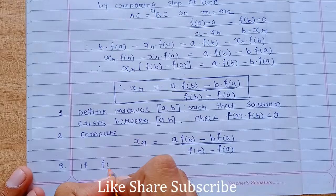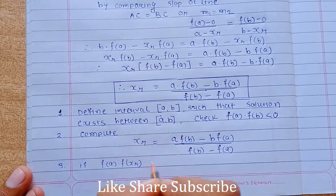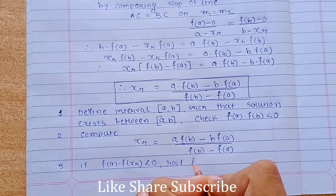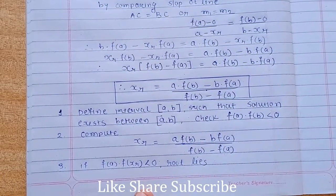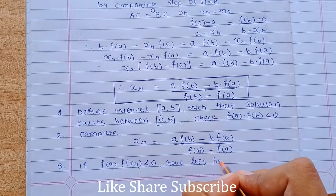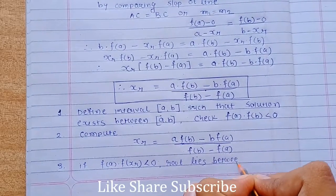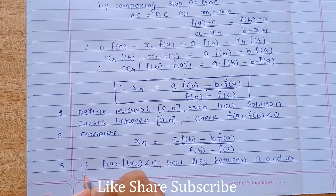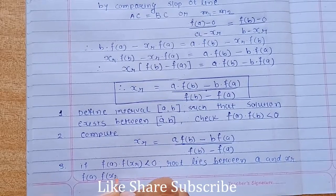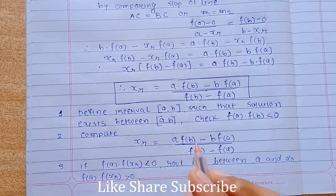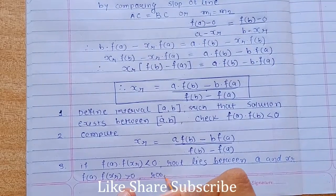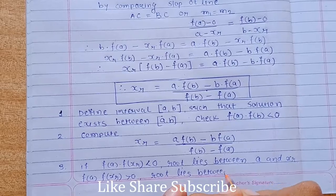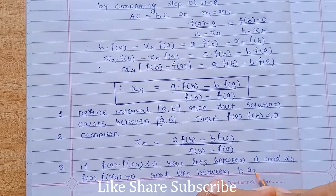If f of a into f of xr is less than 0, then root lies between a and xr. And if f of a into f of xr is greater than 0, then the root lies between b and xr.